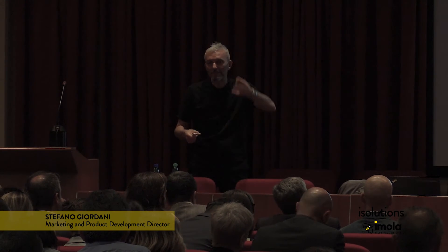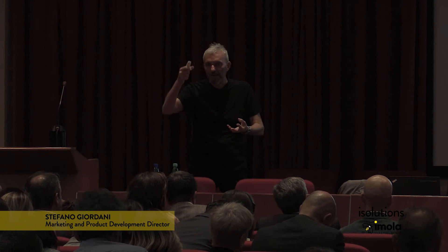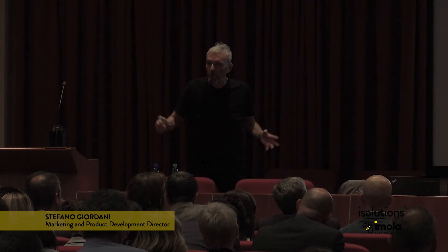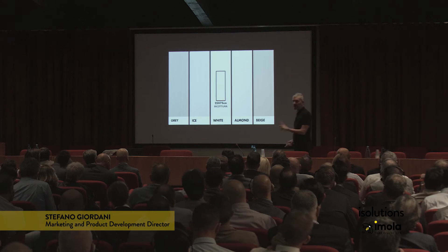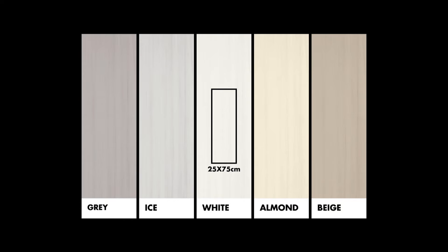The veins become pale strips that can be seen against the light. This is a very smooth product. The size is 25 by 75, not rectified, with a very interesting price.